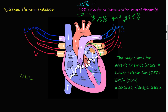The remaining 20% comes from aortic aneurysms, valvular vegetations, and ulcerated atherosclerotic plaques in arteries. So 80% comes from blood clots already within the heart, and the 20% comes from different sources — mainly aortic aneurysms, valvular vegetations, and ulcerated atherosclerotic plaques.